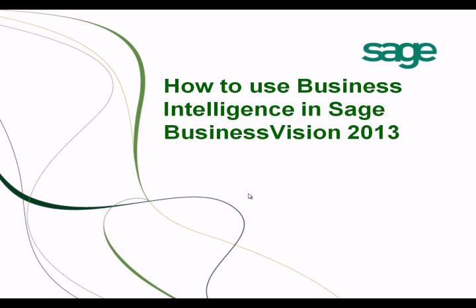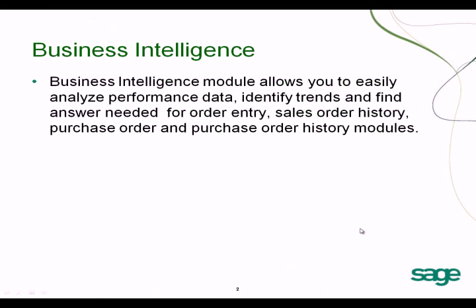This video will show you how to use Business Vision Intelligence in Sage Business Vision 2013 or higher. The Business Intelligence module is a new feature that allows you to easily analyze performance data, identify trends, and find answers needed for order entry, sales order history, purchase order, and purchase order history modules.